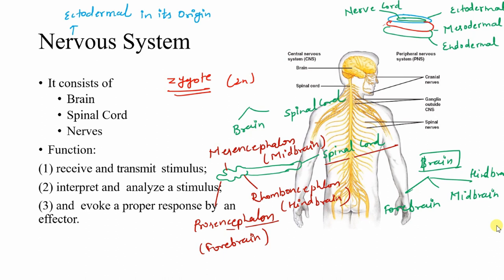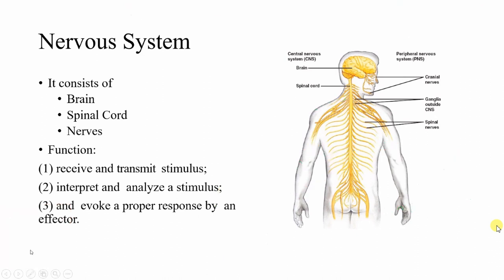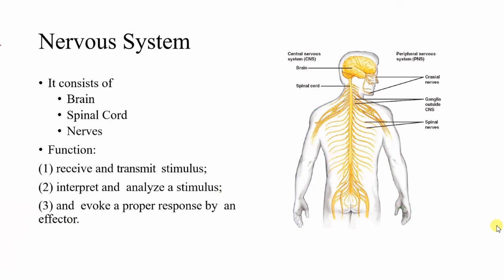The nervous system is mainly classified into two parts. First is the central nervous system (CNS), second is the peripheral nervous system (PNS). The CNS — which is commanding — is present in the center and includes the brain and spinal cord. The PNS is present in the periphery.